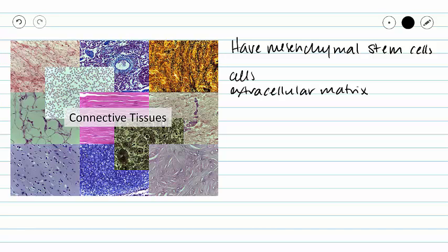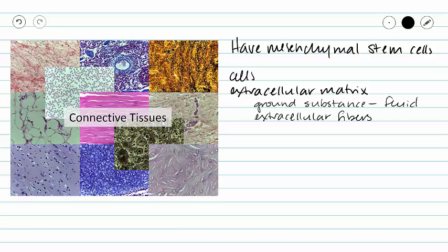Our extracellular matrix can be divided into two major categories: ground substance, which is the fluid component of our extracellular matrix, and our extracellular fibers. We have three types of extracellular fibers. We have collagen fibers that provide strength in one direction, and collagen fibers typically stain pink.